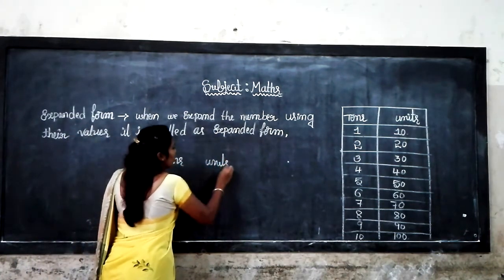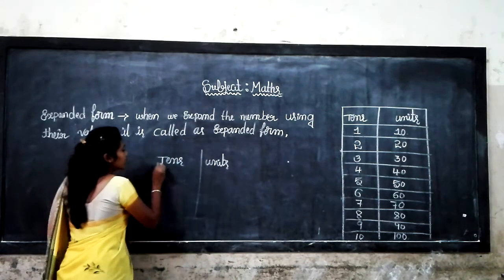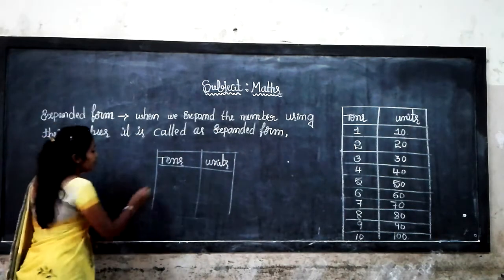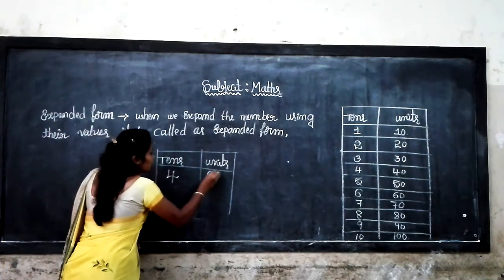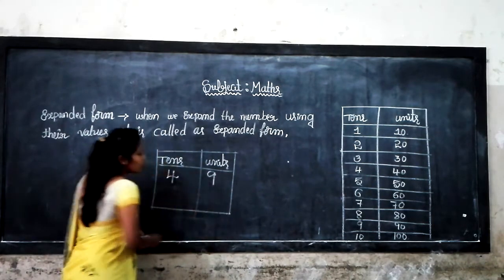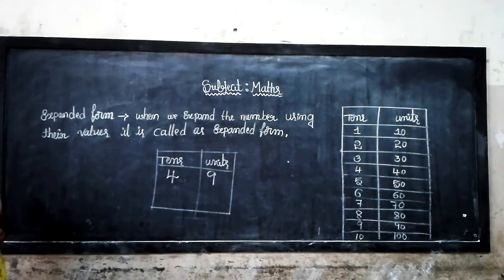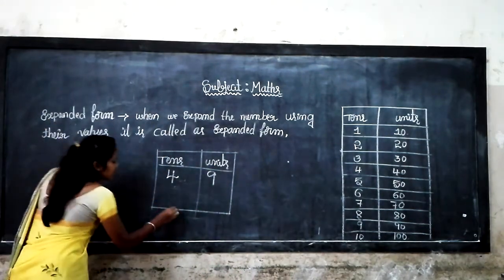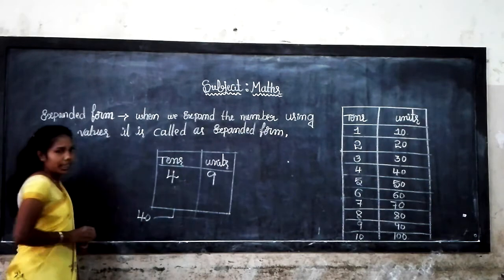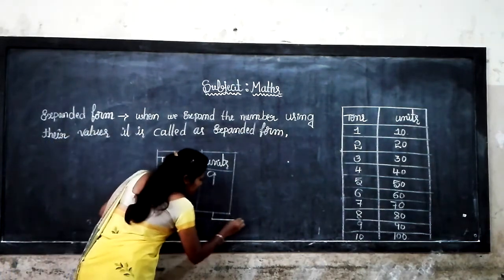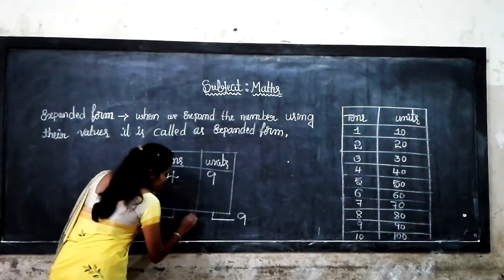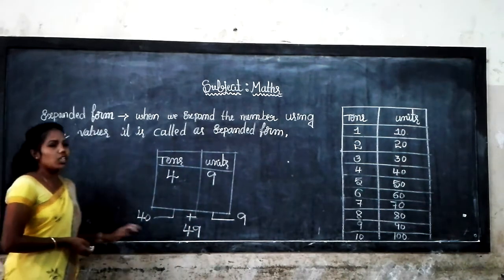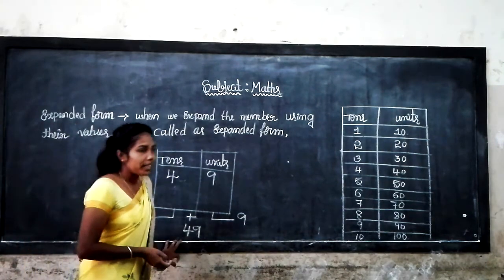Tens and units — it is also called as ones. For example, 49. Now you can see the place value of 49: 4 times 10 is equal to 40, then 9 units is equal to 9. 40 plus 9 is equal to 49.